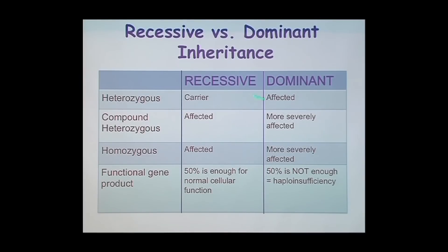Now, on the other hand, what do we mean by dominant in referring to genetic disorders? A dominant disorder is one that requires only one copy of the bad gene in order to develop the disease. So you have one normal copy and one mutant copy, and you develop the disease. In which case, if you're heterozygous, then you're affected.